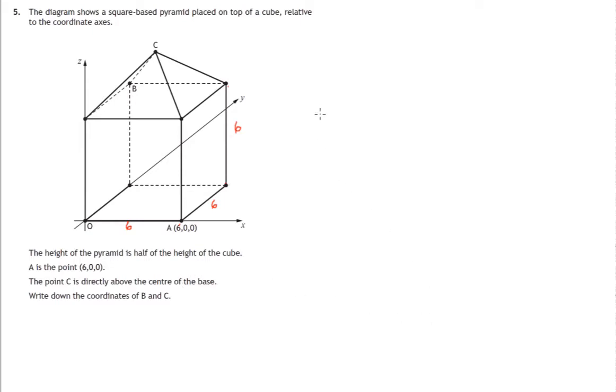So let's have a look at the point B. The x-coordinate of the point B, from the origin we don't need to travel parallel to the x-axis at all to get from the origin up to the point B. So the x-coordinate is 0.